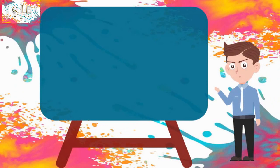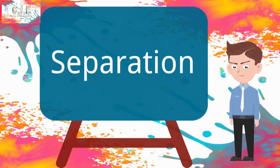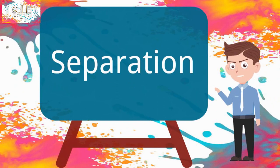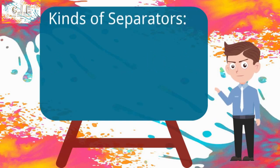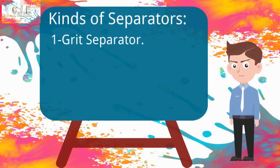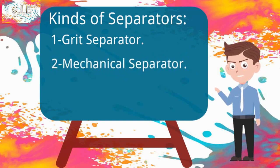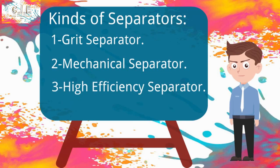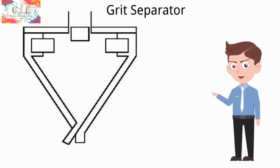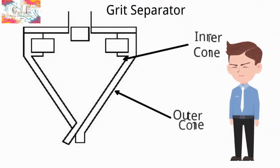After milling, the products go to the separation step to separate fine and coarse products. In cement industry we have three kinds of separators: grid separator, mechanical separator, and high efficiency separator. Grid separator has inner and outer cones.